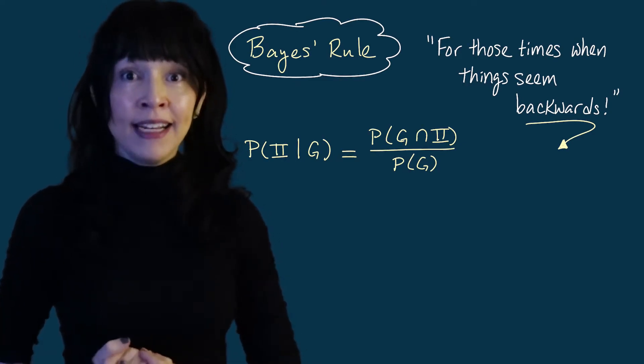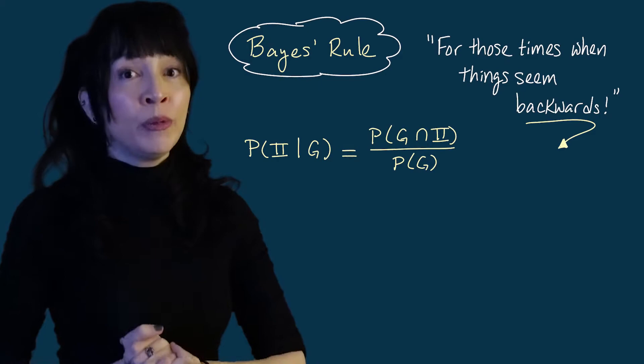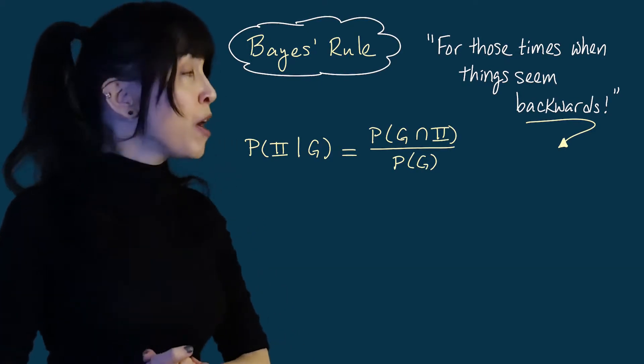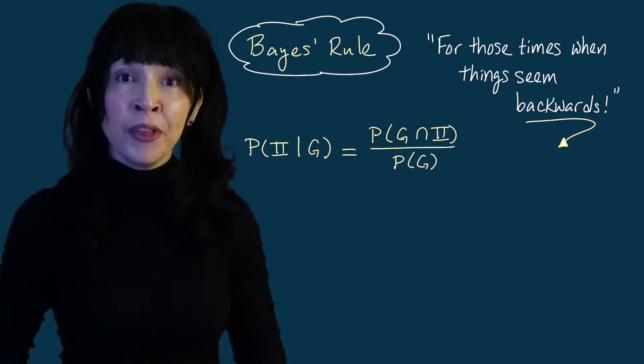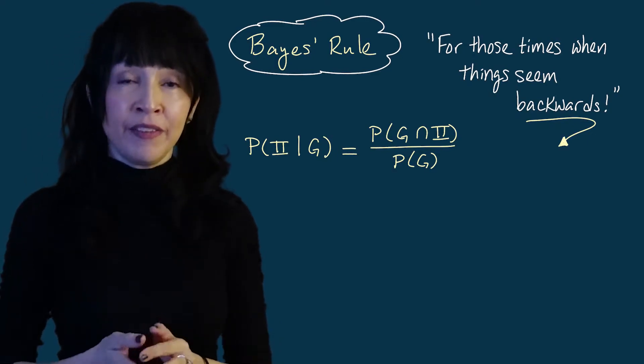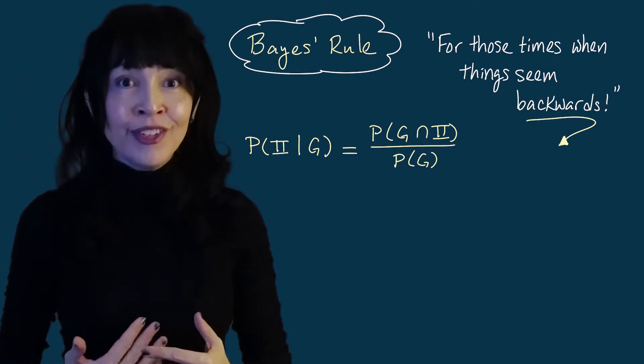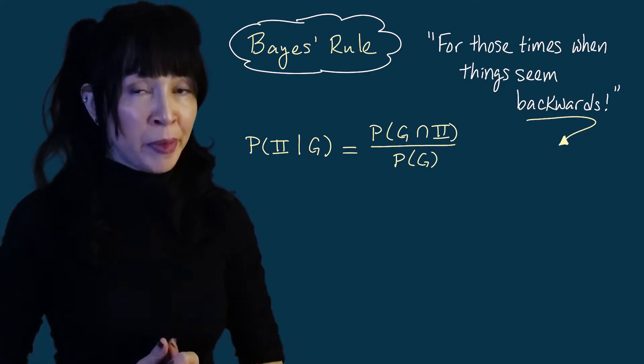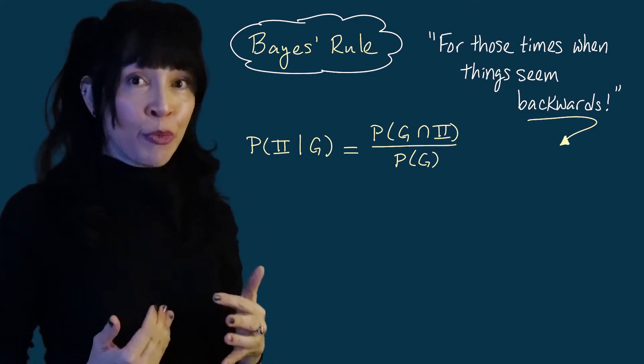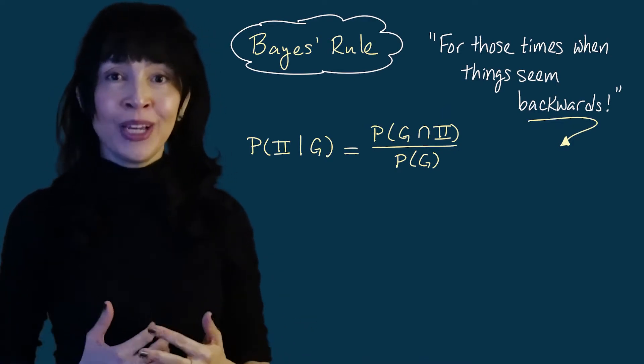Here is the event I want to find in the probability. The probability we choose box two, given we observed a green ball. Using the definition of conditional probability, I can write this as the probability of getting a green and choosing from box two over the probability of getting a green. Now I can unravel the definition of conditional probability in order to write this intersection on top as a conditional probability times a single probability alone.